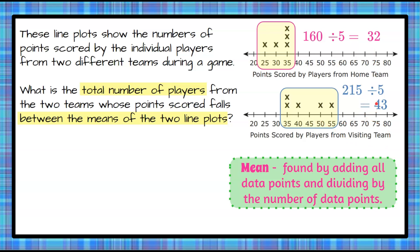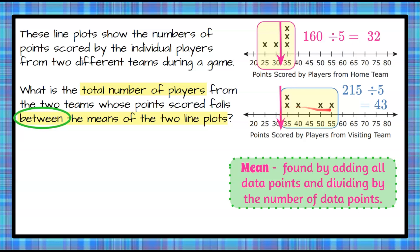Now that we have the two means, the two averages, we're going to go back. What was the total number of players from the teams who scored between the averages — the two means on the line plots? So we see 32, and we're going to mark 32 on our line plot right here because we want to find the players between. We can see that there are three players above it on the home team, and over here all of the players were above it. Then we have our visiting team's mean of 43, so we're going to put our boundary line there.